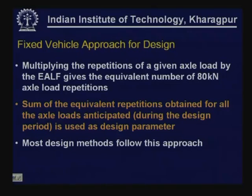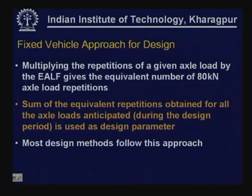We multiply the repetitions of a given axle load by the equivalent axle load factor for that load to get the equivalent number of 80 kN axle load repetitions. The sum of all equivalent repetitions for all anticipated axle loads during the design life period gives the total equivalent standard axle loads, which is the input for design. Most design approaches follow this method.